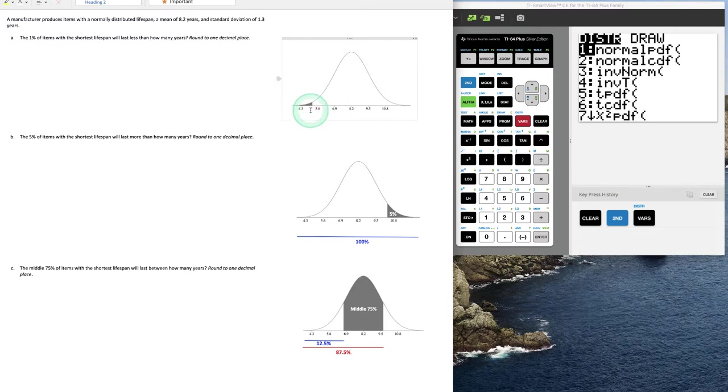Notice just from the picture being shaded, we cannot tell what that value is that corresponds to the lowest 1%, but we do know that it's somewhere in between 4.3 and 5.6 years.